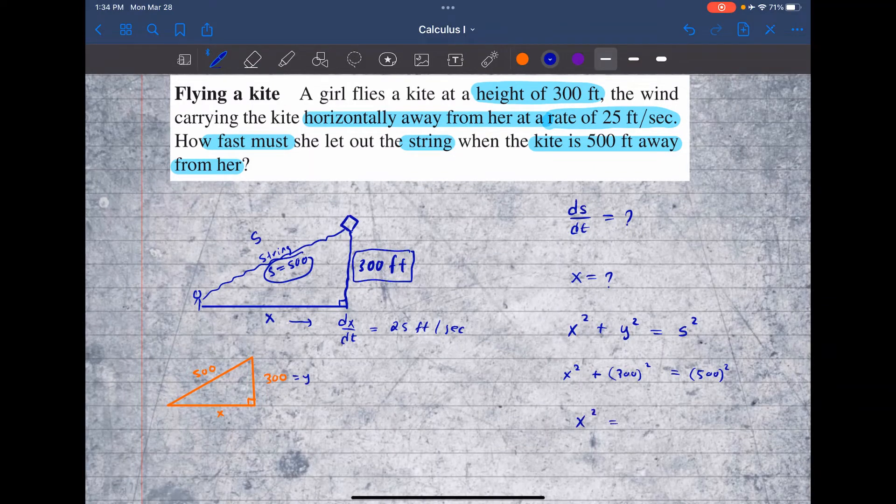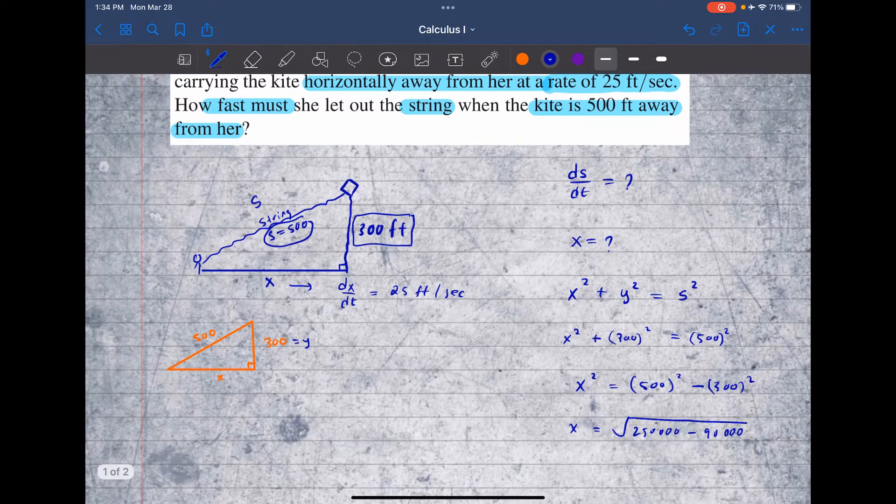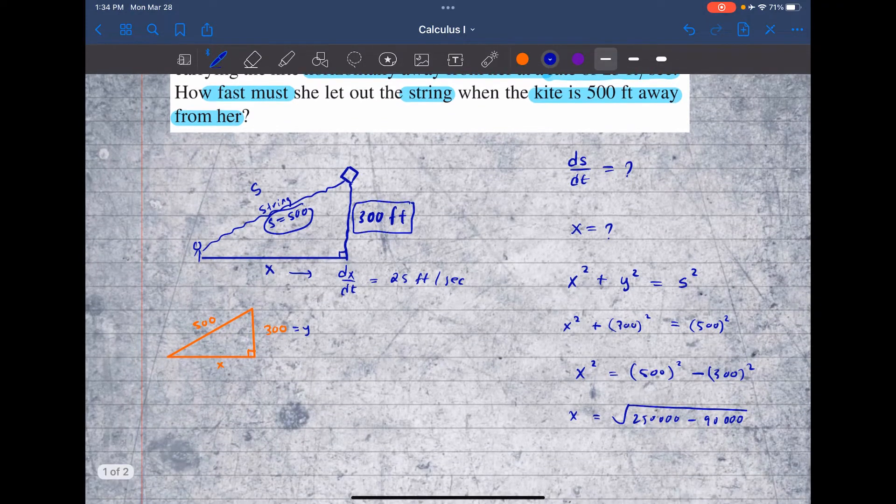So you have x squared is equal to 500 squared minus 300 squared, and x is equal to positive square root of that. So 500 squared, that's 500 times 500, which is 250,000. And 300 squared, that's 300 times 300, that's minus 90,000. So if you do 250,000 minus 90,000, you will get about 160,000.